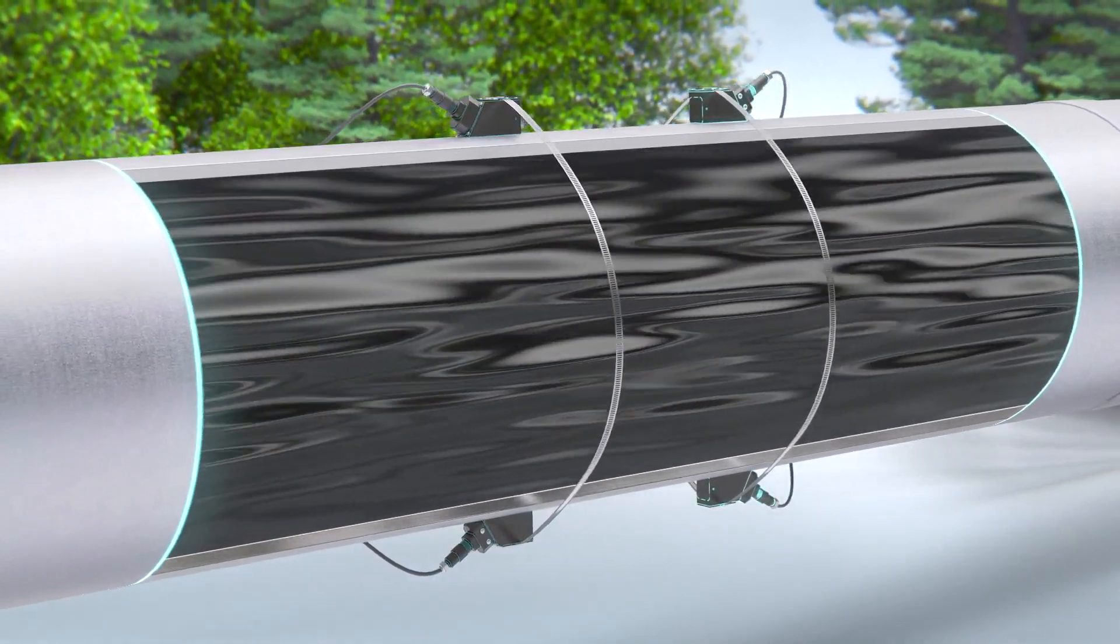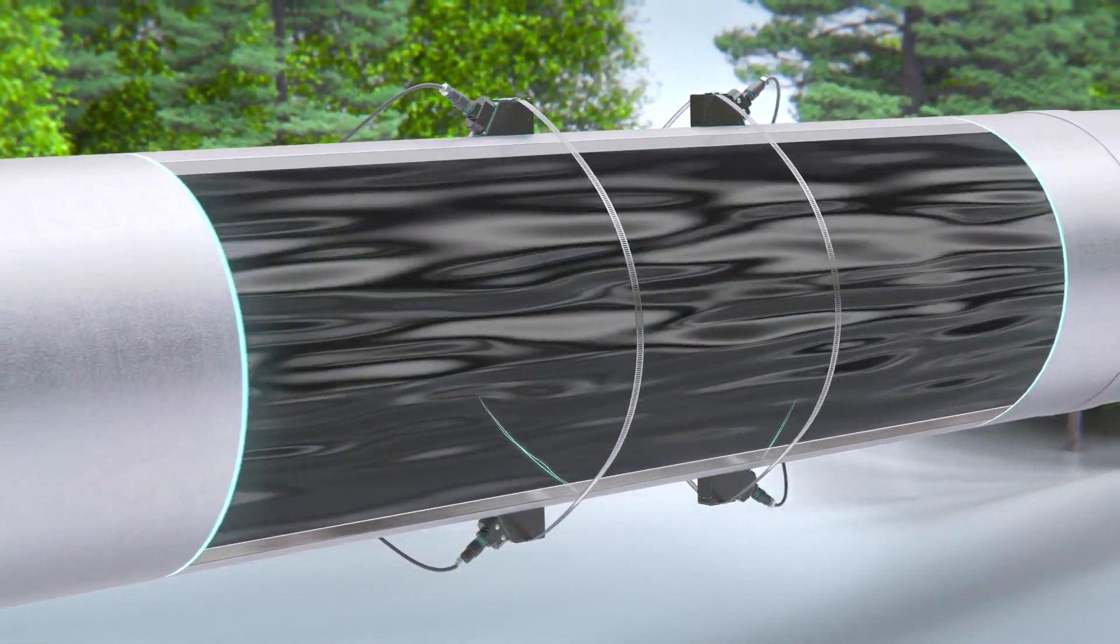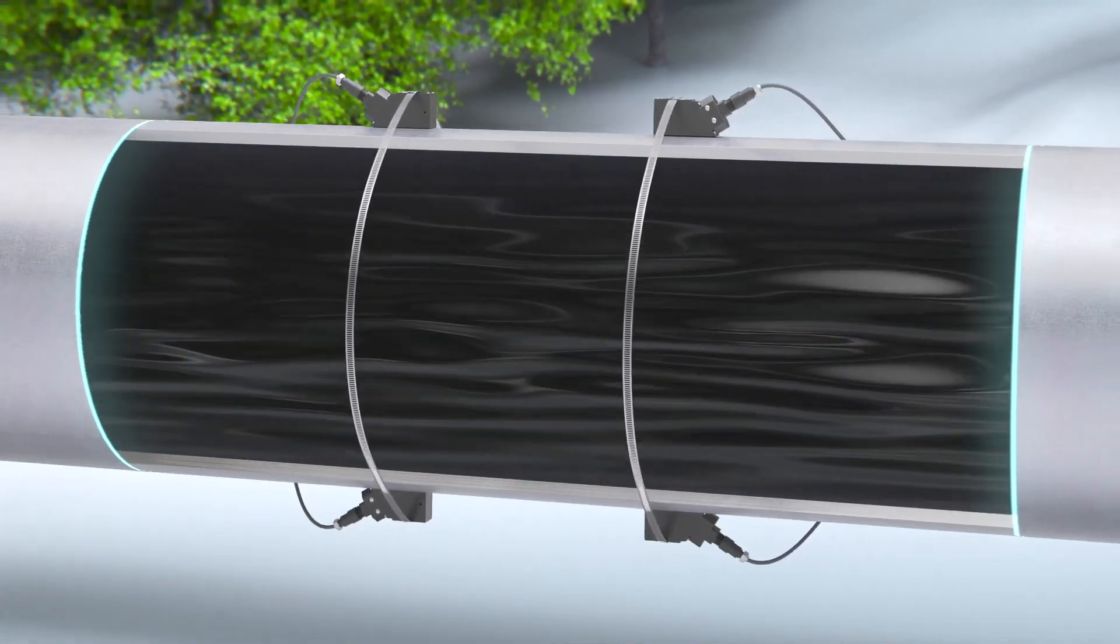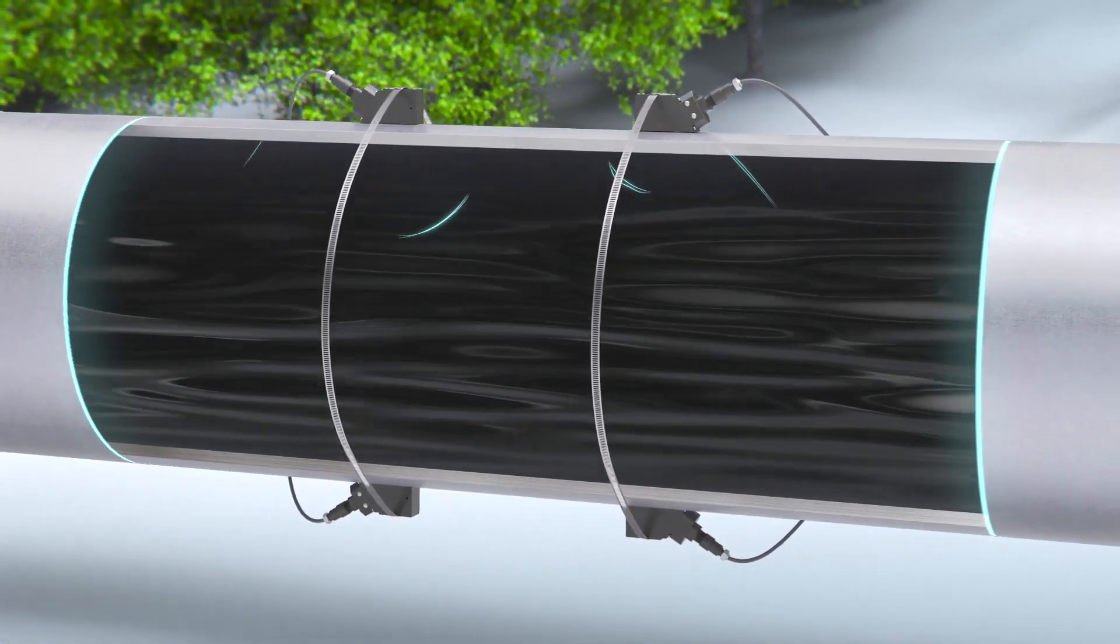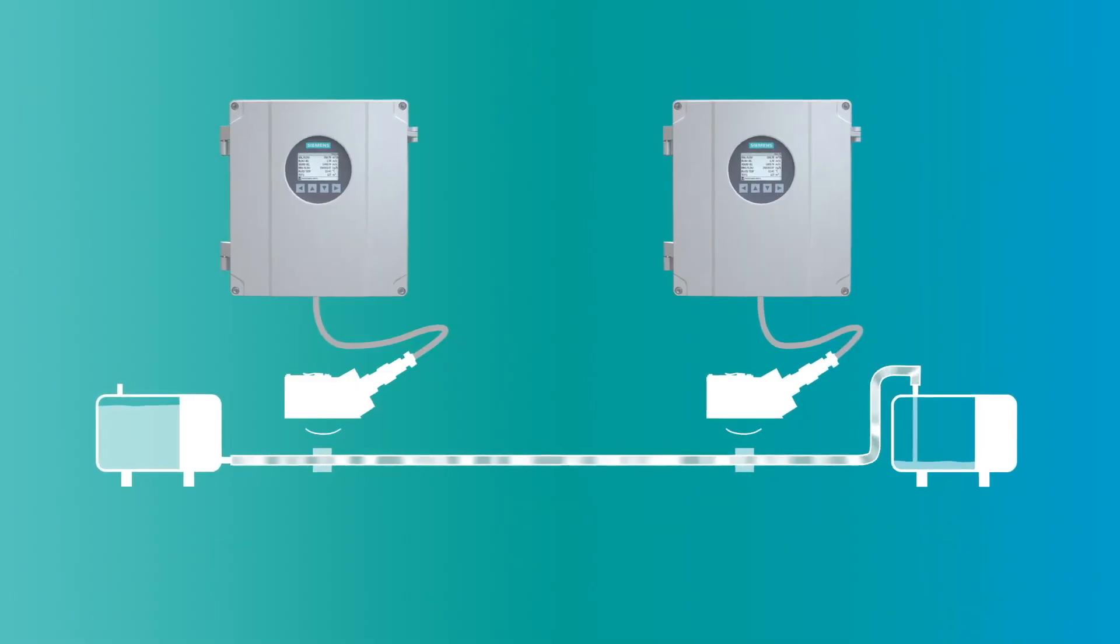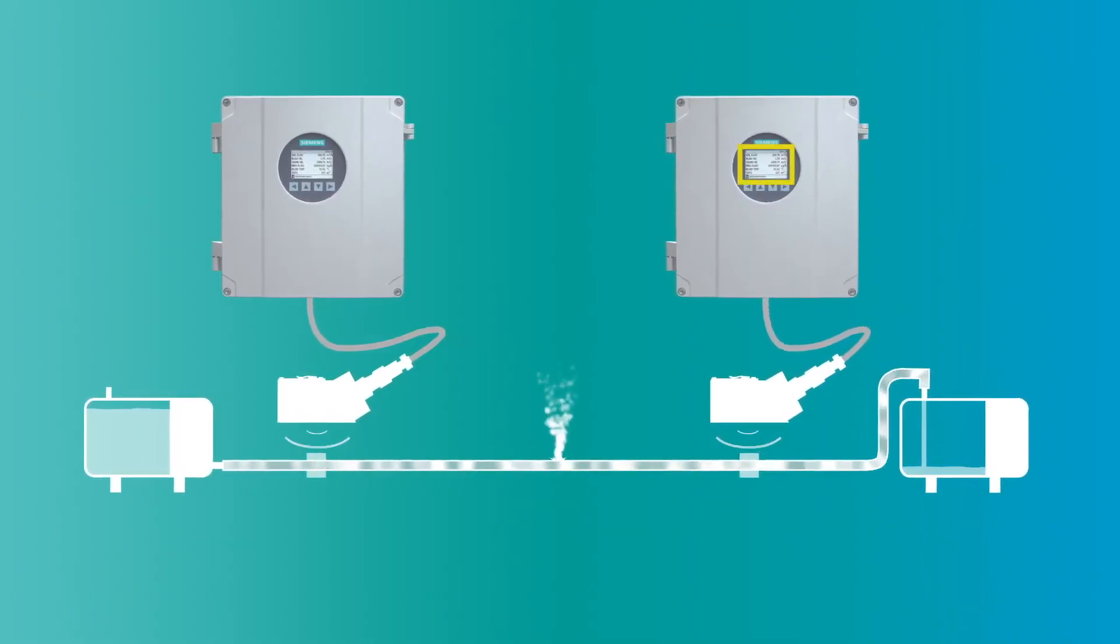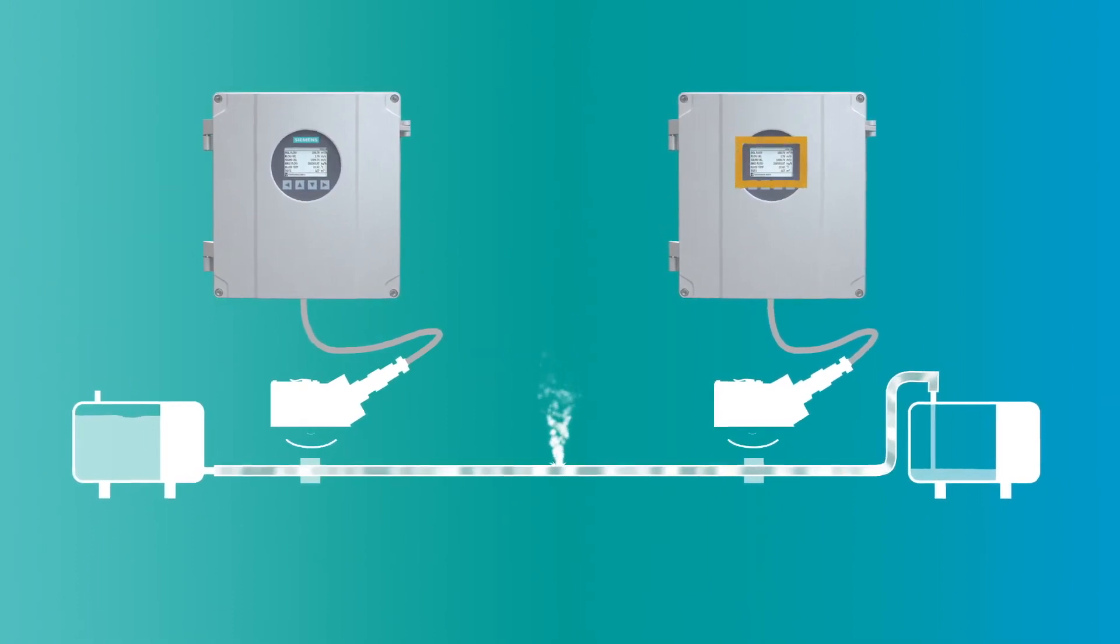Citran's FS230 is just as accurate as the industry standard calibrated turbine meters. The high accuracy means two Citran's FS230 systems can be used effectively for leakage protection.